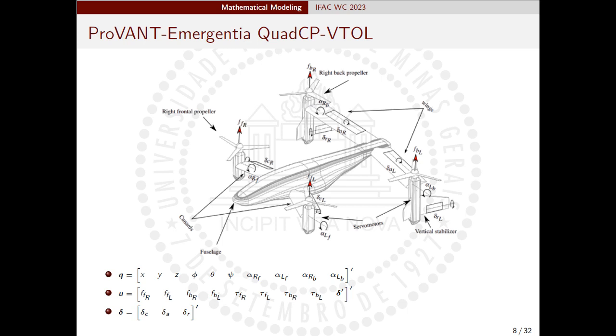Here, the vector of generalized coordinates is composed of the position of the origin of the body frame with respect to inertial frame, the Euler angles using the ZYX convention about the local axes, which describe the orientation of the body frame with respect to inertial frame, and the tilting angles of the frontal right and left, and back right and left tilting mechanisms.